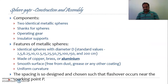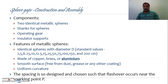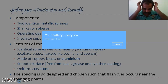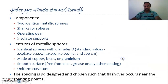Coming to the construction and assembly of sphere gaps: the procedure is very simple. You require two metallic spheres — identical ones — which are to be suspended. You also require shanks, just like shafts in machines, and an operating gear to adjust the spacing between the two spheres, plus insulator supports. So the important components of sphere gaps are: two identical metallic spheres, shanks, operating gear, and insulator supports.